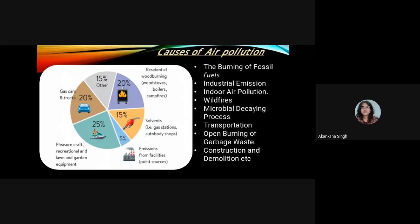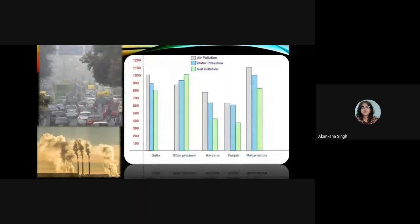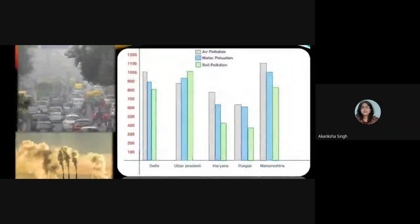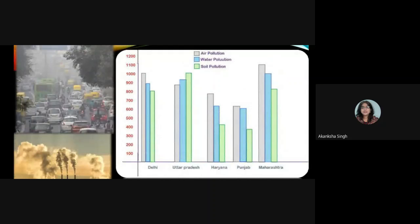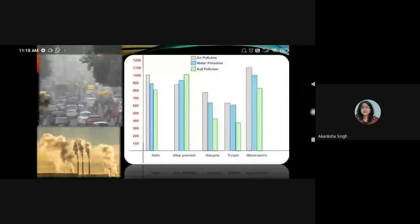A chart shows the percentage of total air pollution caused by various sources. Additional data indicates air pollution, water pollution, and soil pollution rates across various states and Delhi as an individual city.